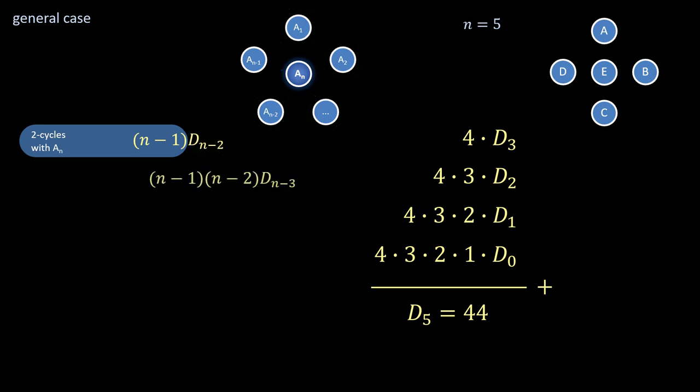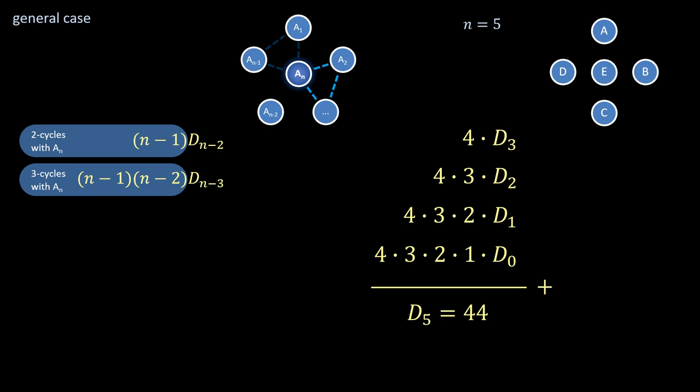Same thing for 3 cycles, of which there are (n-1) times (n-2), while the excluded subsets now contribute D_(n-3) derangements each. And so on and so forth.